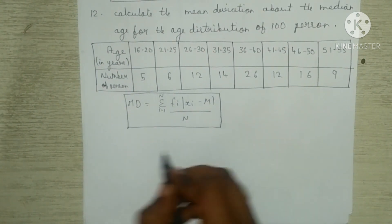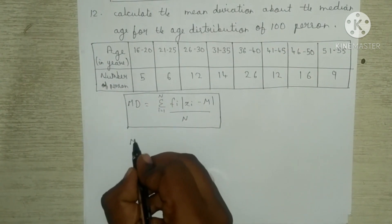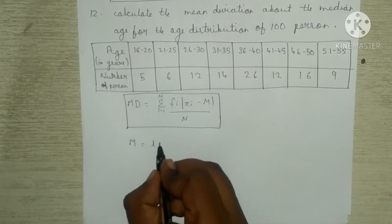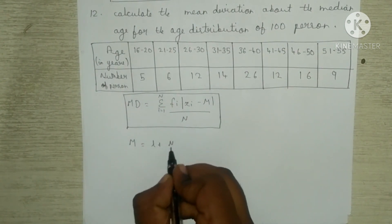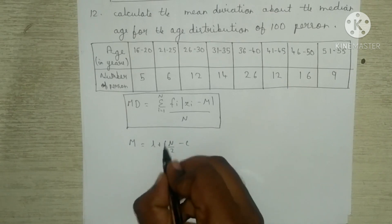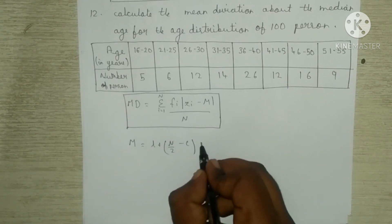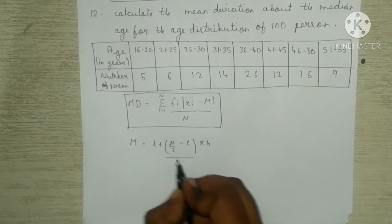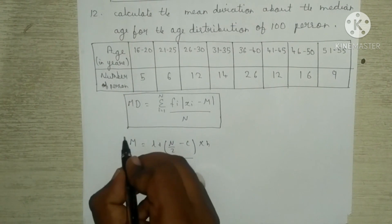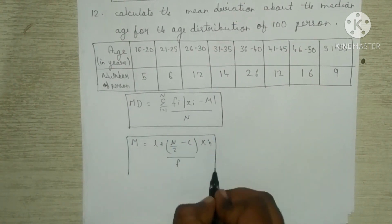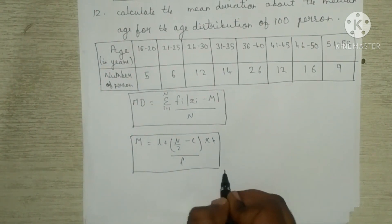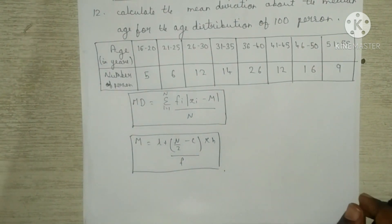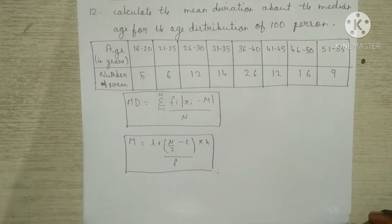For the twelfth question — calculate the mean deviation about the median — the mean deviation formula applies. To find M: M = L + (N/2 minus C) × H / f. This is the median formula. These two formulas are used to simplify the twelfth question of exercise 15.1.